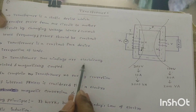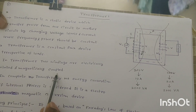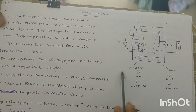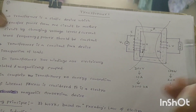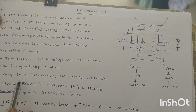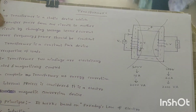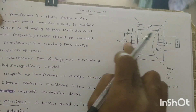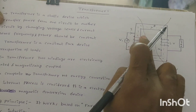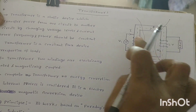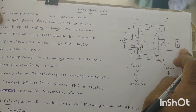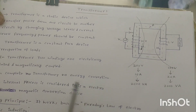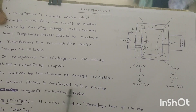In a transformer, the two windings are electrically isolated. If we consider the total transformer process, input is electrical energy and output is also electrical energy — so there is no overall energy conversion. However, if we consider the internal process: input electrical energy is converted to magnetic form, and then magnetic form is converted back to electrical energy. So internally it is electrical → magnetic → electrical.